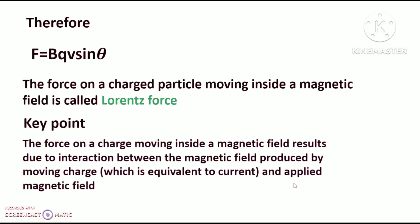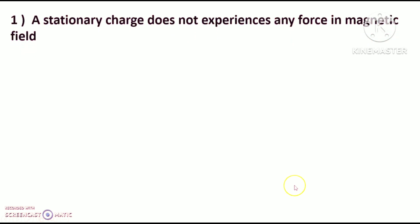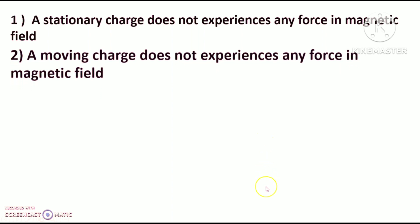Key point: The force on a charge moving inside a magnetic field results due to interaction between the magnetic field produced by the moving charge, which is equivalent to a current, and the applied magnetic field. A stationary charge does not experience any force in a magnetic field. A moving charge does not experience any force in a magnetic field if it moves parallel to the field.